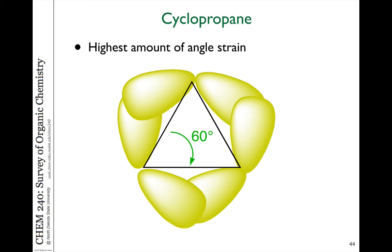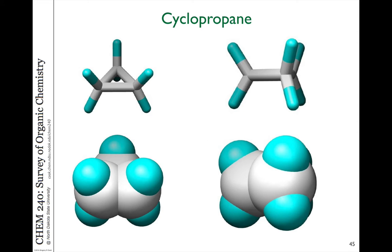Cyclopropane has the highest amount of ring strain because the bond angles are so much more acute than the ideal 109.5 degrees — they should be 60 degrees. Because the molecule simply can't adopt that acute an angle, the actual overlap of the hybrid orbitals is bent, so they're not completely end-to-end. It's a very strained molecule, which is why cyclopropane has the highest ring strain of any of these cycloalkanes. Here's a model picture of cyclopropane in both stick figure and space-filling form.